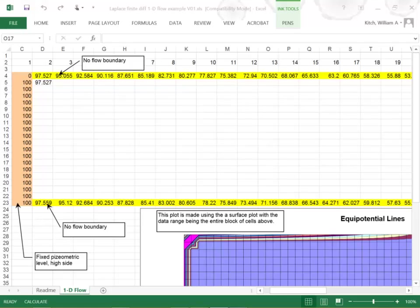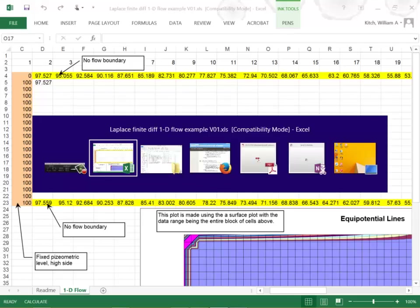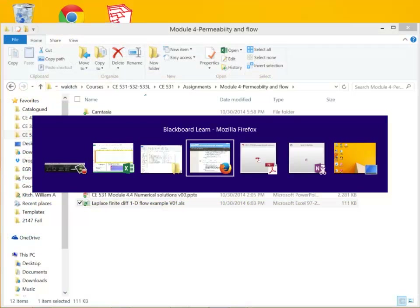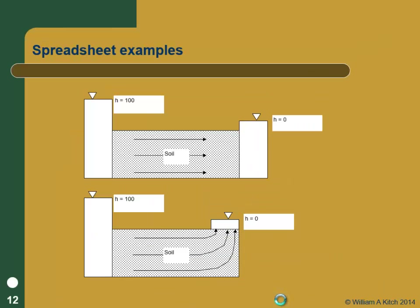We're now going to solve a finite difference solution and we're going to use Excel to do the actual numerical solution because it's really simple. The problem we're going to solve is a permeameter. We've got a constant head of 100 along one boundary and a constant head of zero along the other boundary. We should get flow lines in one direction and equipotential lines in the perpendicular direction — the easiest flow net you'll ever draw, it just looks like a grid.